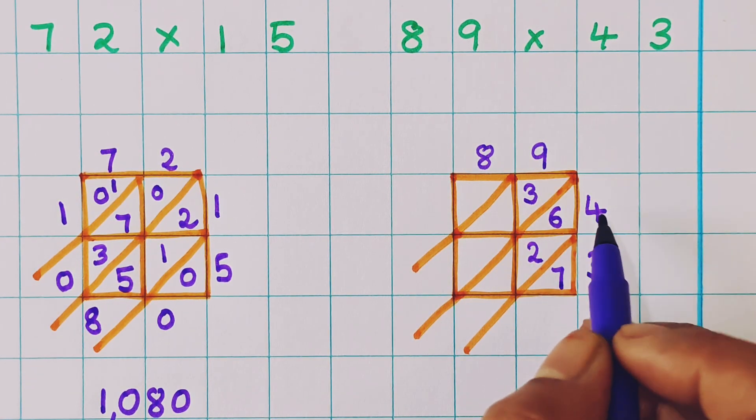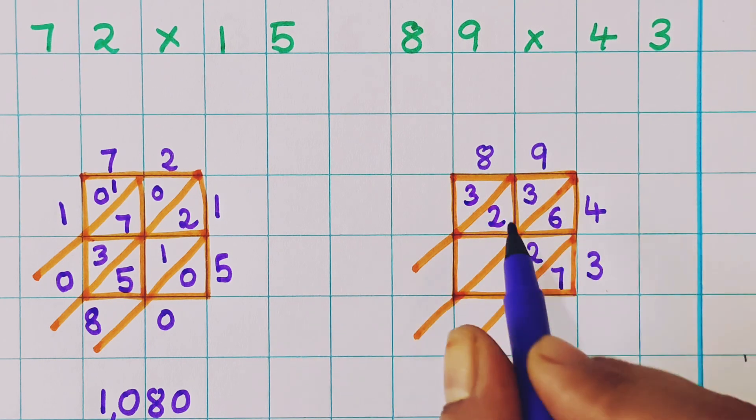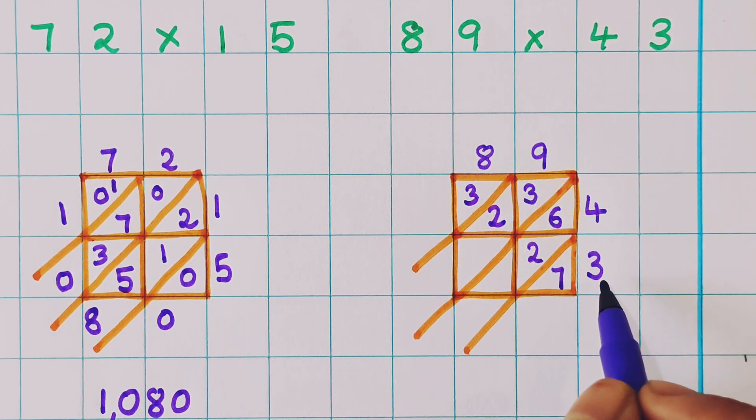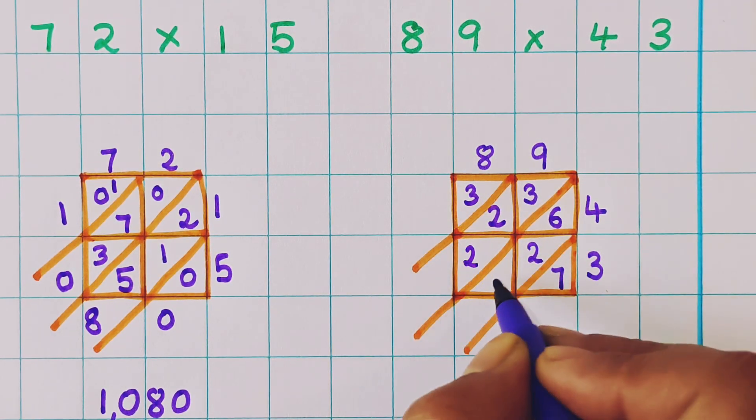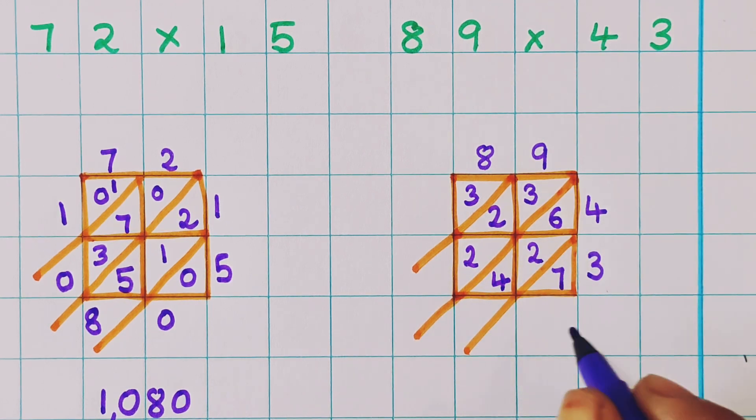8 fours are 32. 3, 2. 8 threes are 24. 2, 4. Now let's do the addition diagonally.